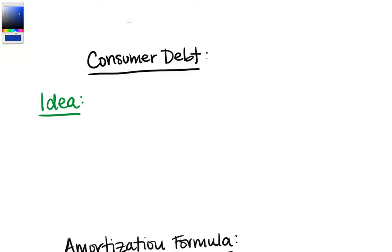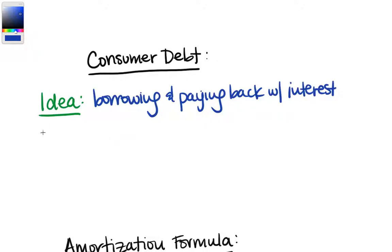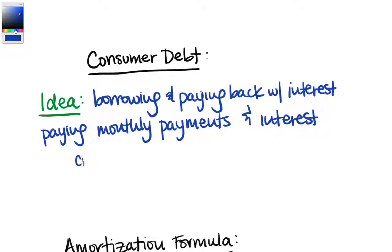So the idea here is that you're borrowing and paying back with interest. First of all you're paying in monthly payments and instead of that interest being simple interest over the whole year like it was a few sections ago, you're paying back in monthly payments and that interest is compounded every month.